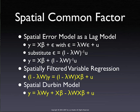The other thing to notice here is that there are particular constraints on the parameters, called the common factor constraints. Namely, λ appears as the parameter of the spatially lagged dependent variable, but λ also appears as part of the parameter of the spatially lagged explanatory variables.